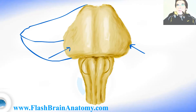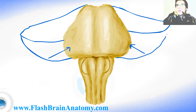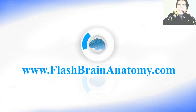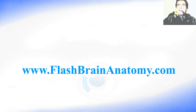The cerebellum is supposed to be behind over here but I did not illustrate it in this image. This here is the basilar sulcus. It is called like that because the basilar artery goes here — the artery is called like that because it is on the basal side of the pons.